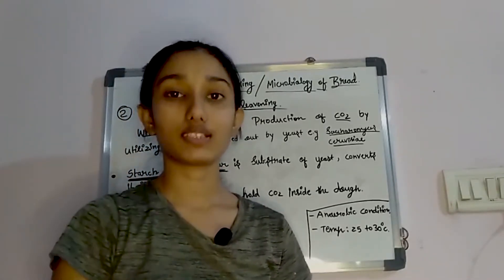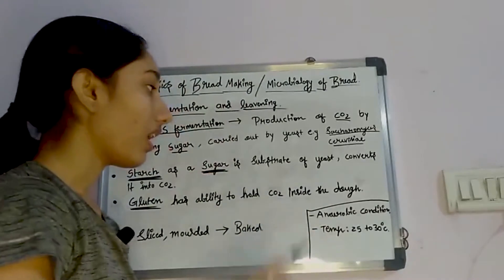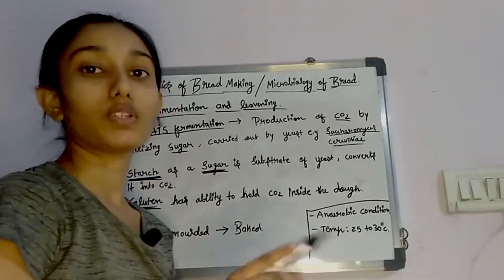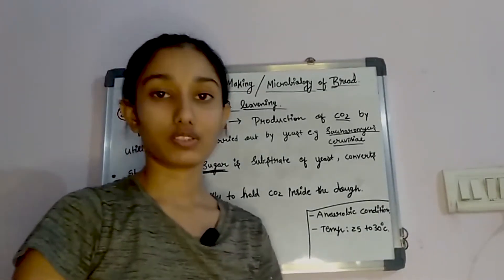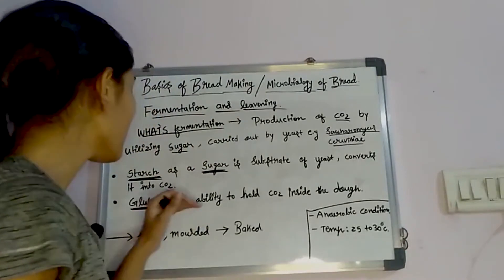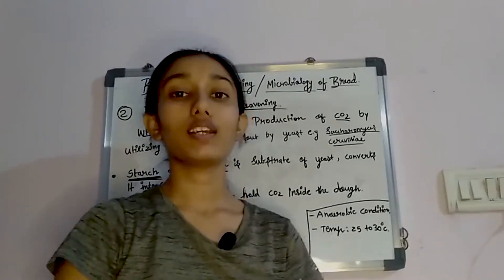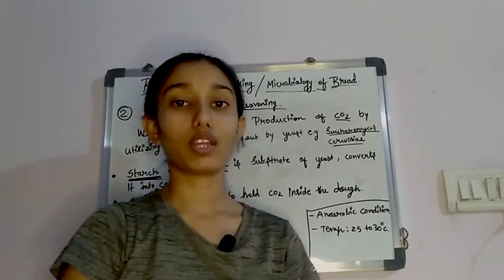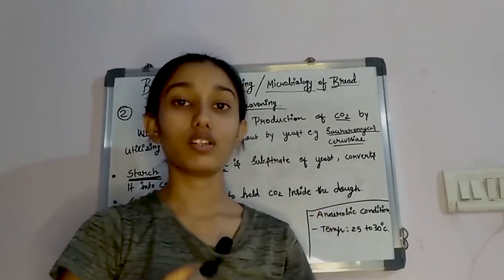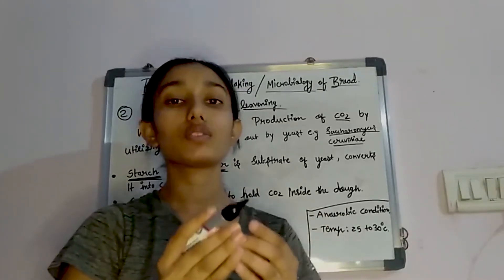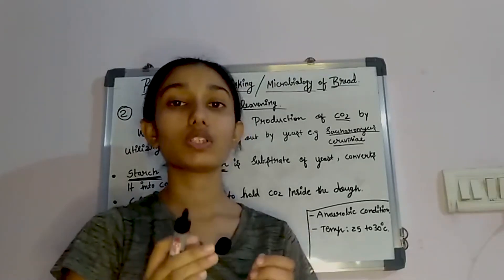But how does CO2 stay in the dough? The other component of the dough responsible for this is gluten. Gluten is a protein of wheat that has the ability to hold CO2 inside the dough. When CO2 accumulates in the dough, the volume of the dough increases, and finally we get the porous and spongy structure in the bread.